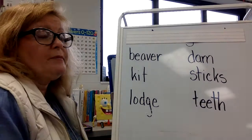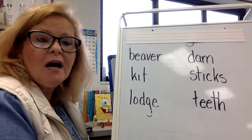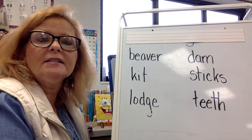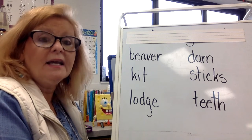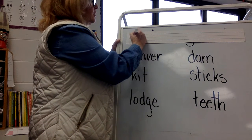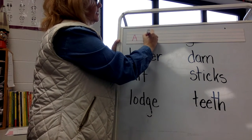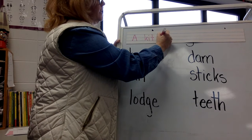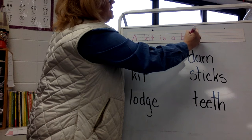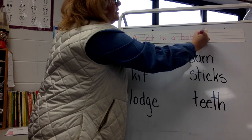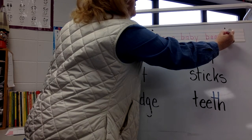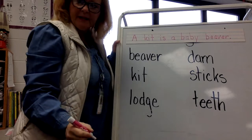The first thing I'm going to write about is something that I learned about the beavers. I learned that a kit is a baby beaver. So my sentence is going to say: A kit is a baby beaver. Starting with an uppercase A. And there is my period at the end.